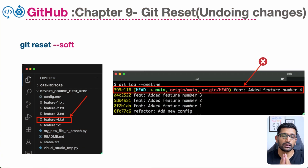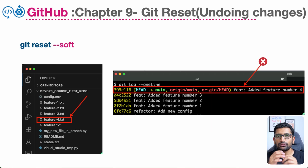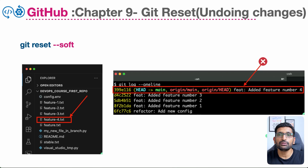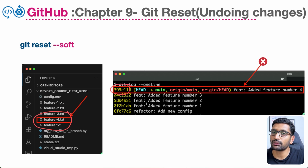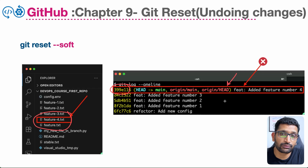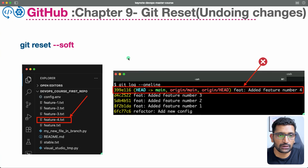Now let's talk about git reset using the soft flag. When you run git reset with the soft flag, the file or commit you are resetting will remain in the staging area. In our previous example we removed feature five; now we want to remove feature four using git reset --soft. The commit hash associated with feature four is visible in the commit history.